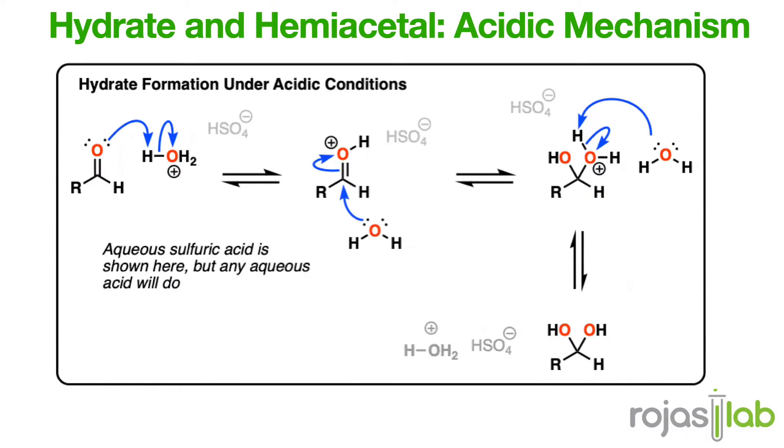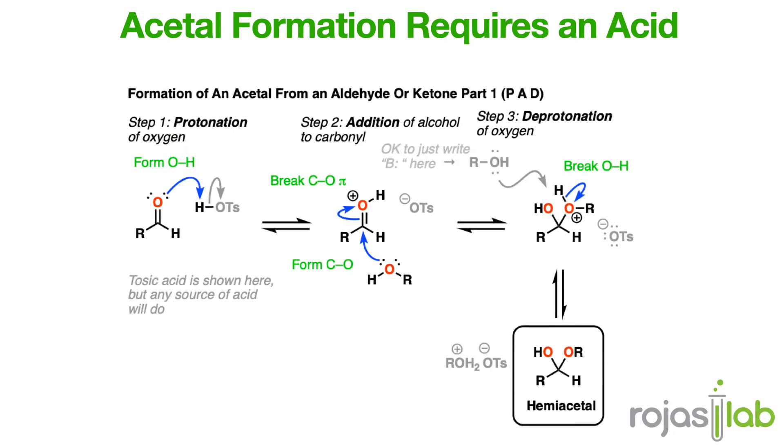The mechanism for formation under acidic conditions is first protonation of the aldehyde or ketone oxygen with an acid, followed by addition of neutral alcohol, and then deprotonation of the oxygen with a weak base. If hydrates and hemiacetals are made through the net addition of water and alcohol across the CO-pi bond, respectively, then you might note a dilemma here. For acetal formation, there's no CO-pi bond to add our second equivalent alcohol across.